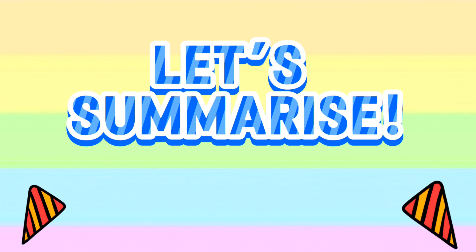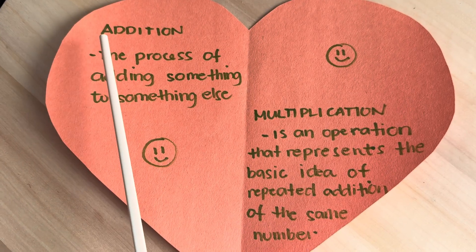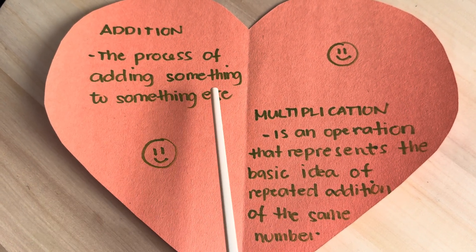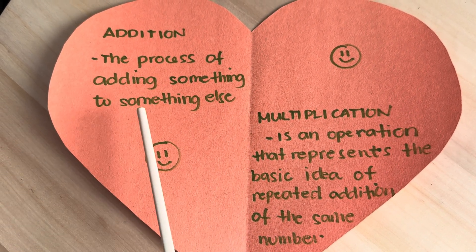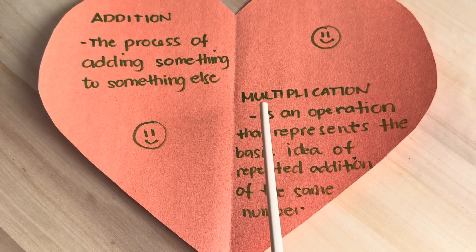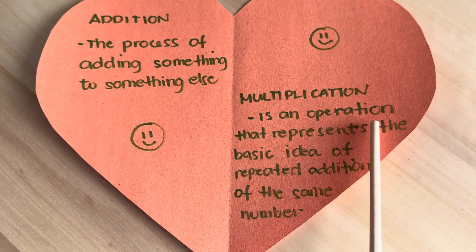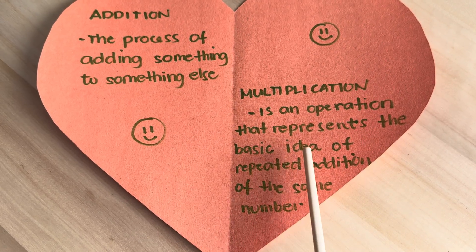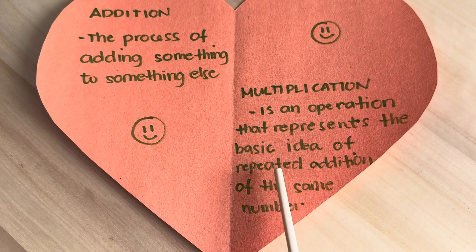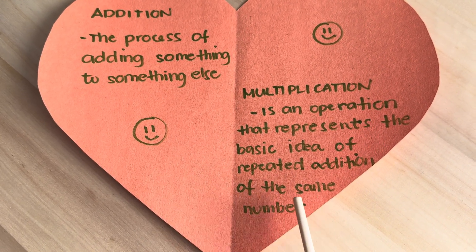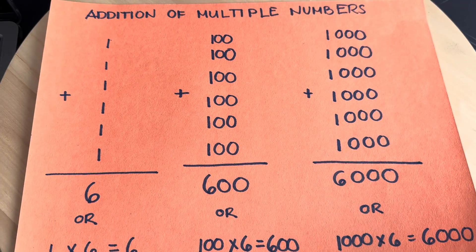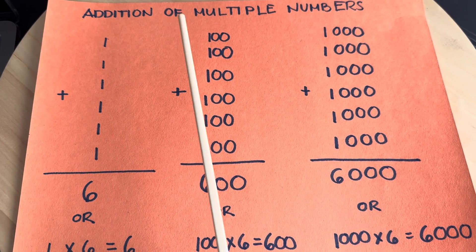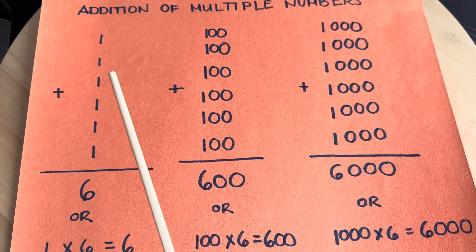Addition is the process of adding something to something else, while multiplication is an operation that represents the basic idea of repeated addition of the same number. Let's check addition of multiple numbers.